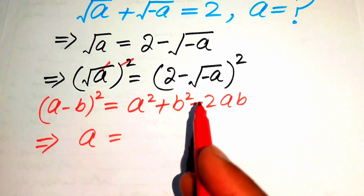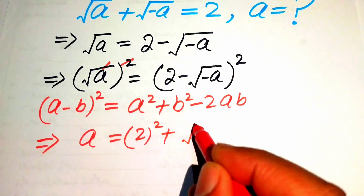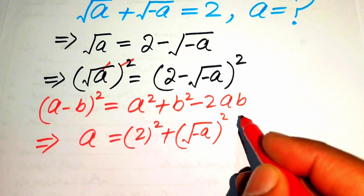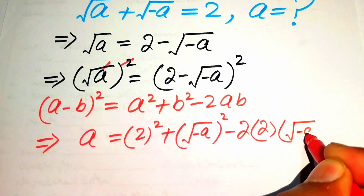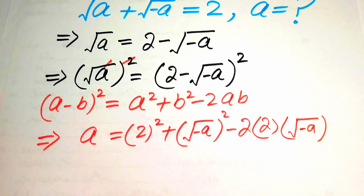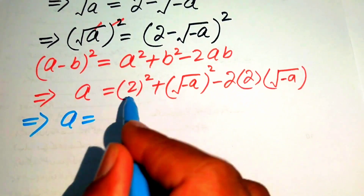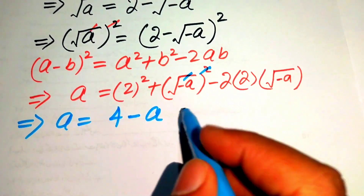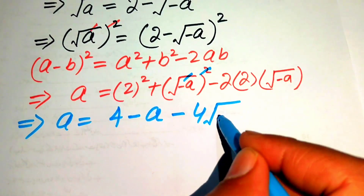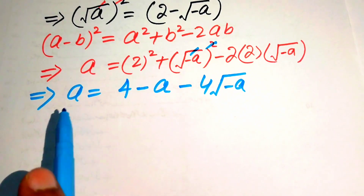Applying the formula to the right hand side, we get: a equals 2² plus (√(−a))² minus 2 times 2 times √(−a). This simplifies to: a equals 4 plus (−a) minus 4√(−a), so a equals 4 minus a minus 4√(−a).